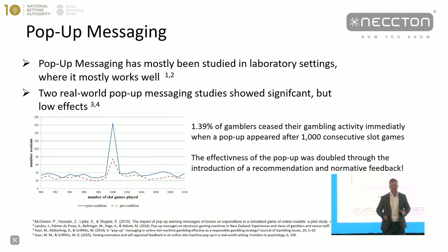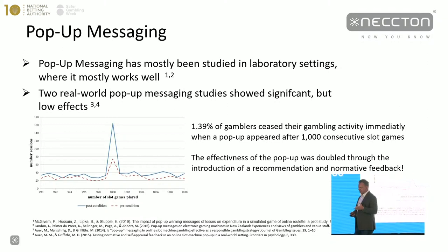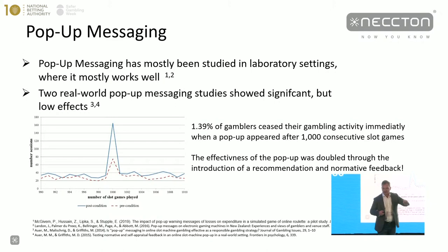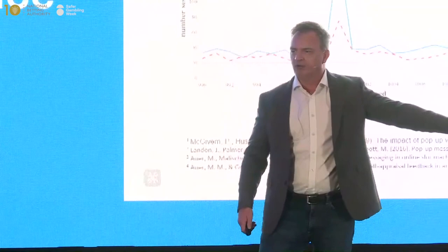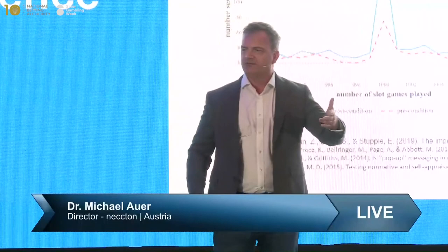We then enhanced the pop-up message by building in additional information. We added normative feedback — telling players that very few other players play that many games — and we changed the buttons. We doubled the effect: the old pop-up saw around 70 stops per thousand, and the enhanced pop-up resulted in around 130. But still very few players stopped to gamble — the effect was very low, though it improved.